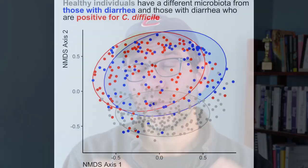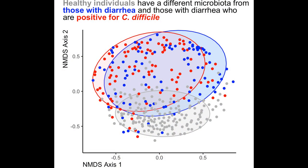You're in the right place, because today I'm gonna show you how we can do that. I want to go back to the data, back to that distance matrix, and ask the question: are the distances between samples from the same group smaller — closer to each other — than perhaps the distance between samples from different groups? So if we look at our ordination, we see at the bottom we have samples from healthy individuals, and up at the top we have samples from people with diarrhea, and samples from people with diarrhea who are positive for C. difficile.